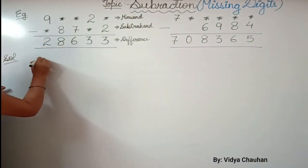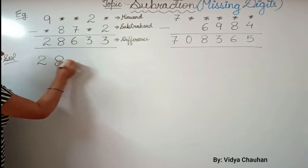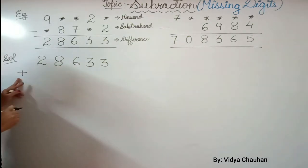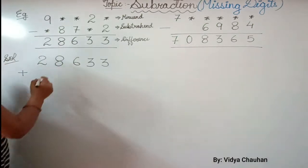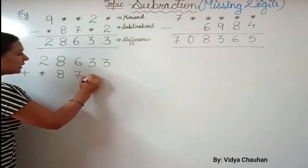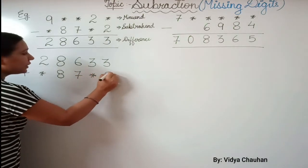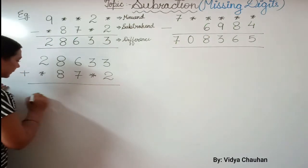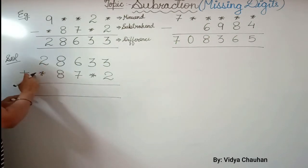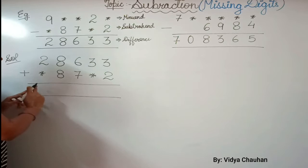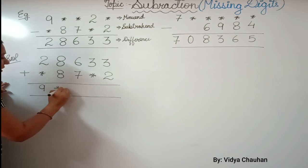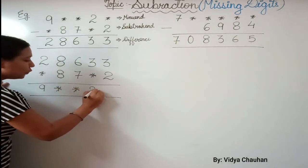So first I will write the difference — 28,633 — plus the subtrahend. The subtrahend: first digit is not given, next is 8, 7, then again not given, and it is 2. The addition of subtrahend and difference equals the minuend: 9, then missing digit, missing digit, 2, and then again a missing digit.